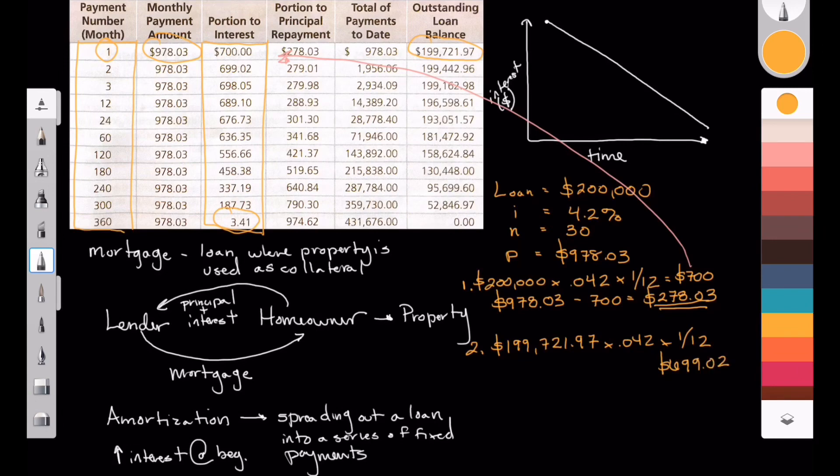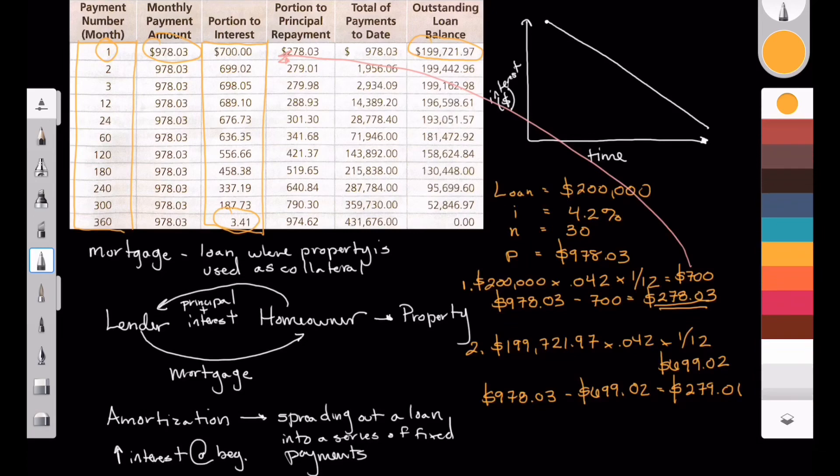So if we work through the same calculation and take our monthly payment of $978.03, subtract the interest of $699.02, what we would find out is the portion that is going to principal is actually $279.01. So not fantastic, right? So in a month period, we've essentially, between our first month and our second month here, we're a little bit under a dollar is now going towards the principal versus the prior period. But that's how amortization works.